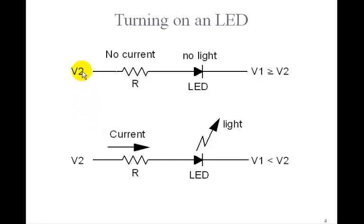So as I mentioned, to turn on the LED, you make V2 greater than V1, in which case current goes through. You'll need a little current limiting resistor here. And if V2 is less than or equal to V1, then no current goes through and you get no light.